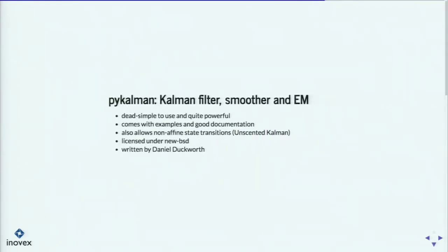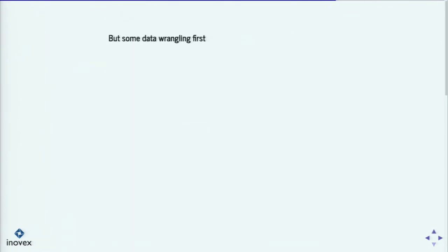A really cool library for this is PyKalman. It's a Kalman filter, smoother, and expectation-maximization library. It's simple to use and really powerful. It comes with many examples and good documentation. Besides linear transition matrices, you can also define non-linear and non-affine state models. It's licensed under BSD license and written by Daniel Duckworth. Now we're going to use it to actually help with the curiosities we found in the data.